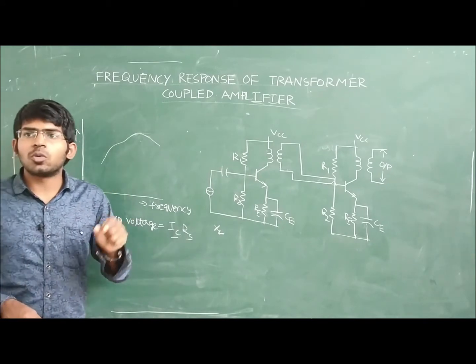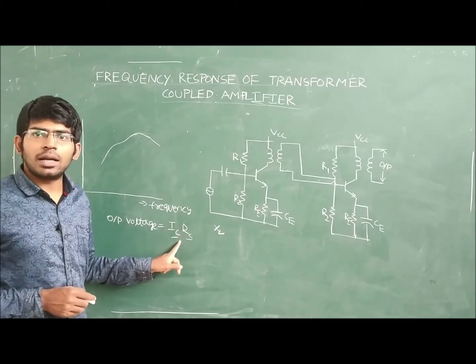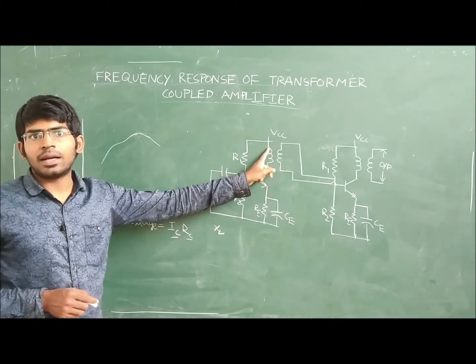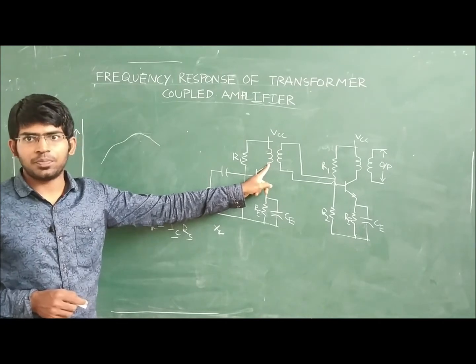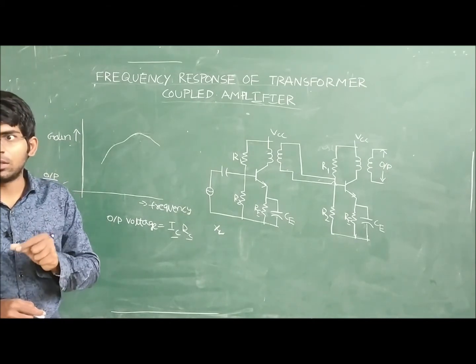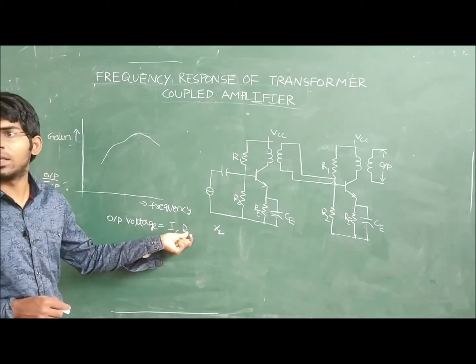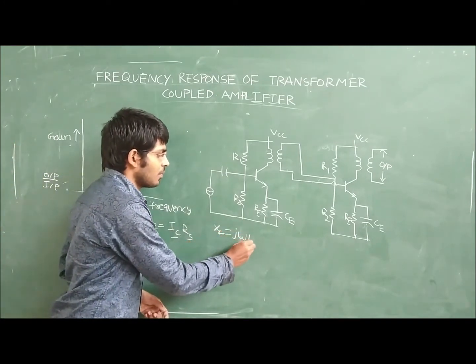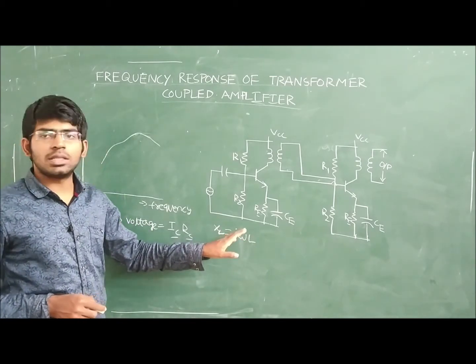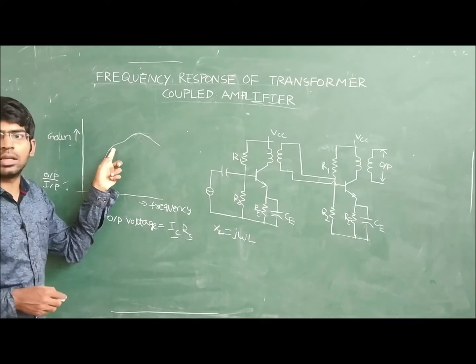We are examining why the output voltage is less at low frequencies. Output voltage is the product of the collector current IC and the reactance of this primary winding. We know every inductor behaves like a small resistor also, expressing some amount of resistance. So the output voltage is IC into RC. Finally, this reactance J omega L is low at the low frequencies. Because this reactance is low at low frequencies, the output voltage is less, and therefore the gain is less at the low frequencies.